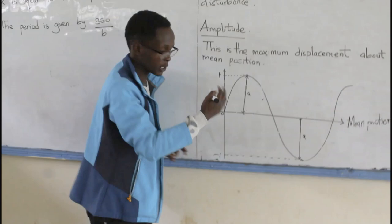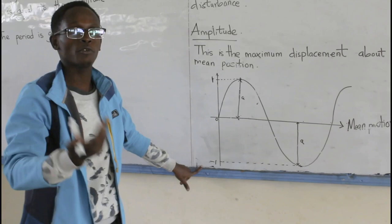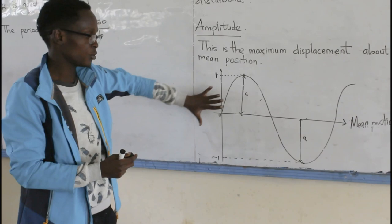Which shows us that the amplitude of waves can have either two values. A positive value which is to the upper side of the mean position or a negative value which is to the lower side of the mean position.